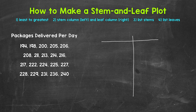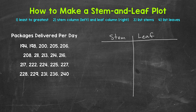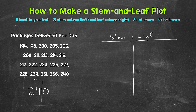We will start with a vertical line and then a horizontal line. The left column is the stem column and the right column is the leaf column. Taking a look at the data, we have three-digit numbers that range from 194 to 240. With stem and leaf plots, we split each value into a stem and a leaf. For example, let's take 240 — the hundreds and tens digits are going to be the stems and the ones digits are going to be the leaves.